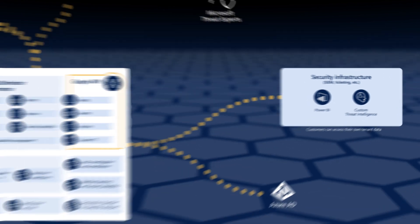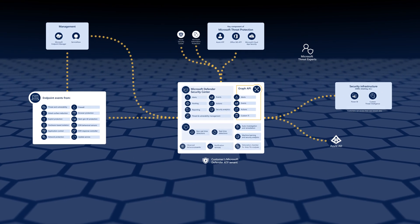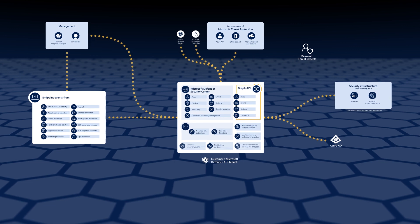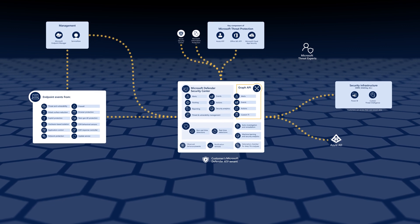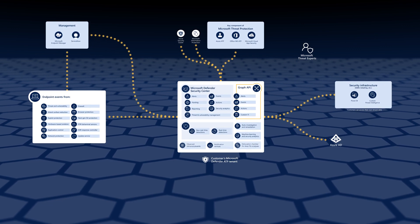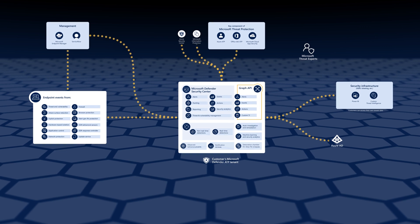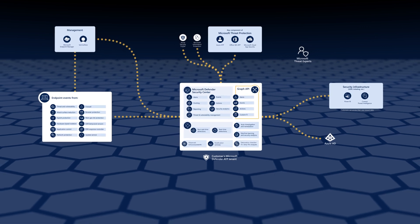The key architectural components of Microsoft Defender ATP are the Security Center console, endpoint sensors, and customers' isolated and secure Microsoft Defender ATP tenants. To learn more about the service's architecture, see the documentation on Microsoft Docs.